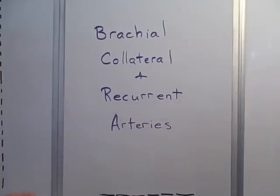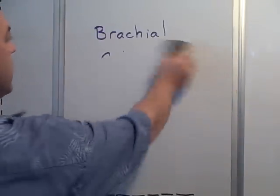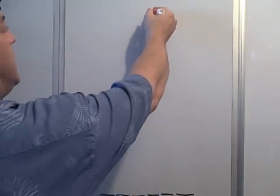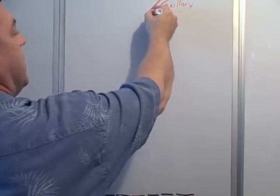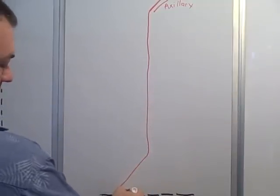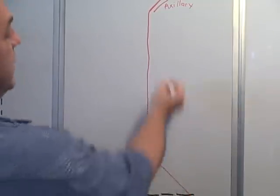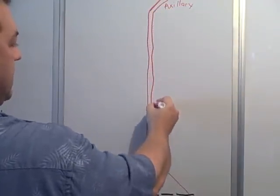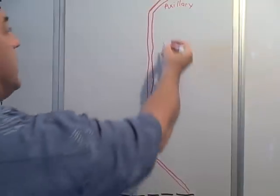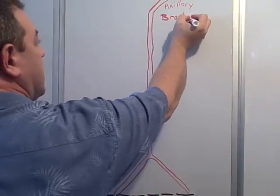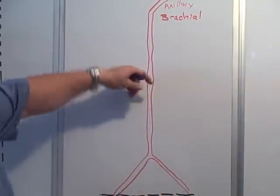We're going to show the collateral and recurrent arteries that come off the brachial artery, the radial and ulnar artery. Keep in mind that the brachial artery starts at the inferior border of the teres major muscle. Before that we'll have the axillary artery, then the brachial artery, which bifurcates about one centimeter below the crease in the elbow. From the top to the bifurcation is the brachial artery. We're going to end up with four collateral arteries that go down.